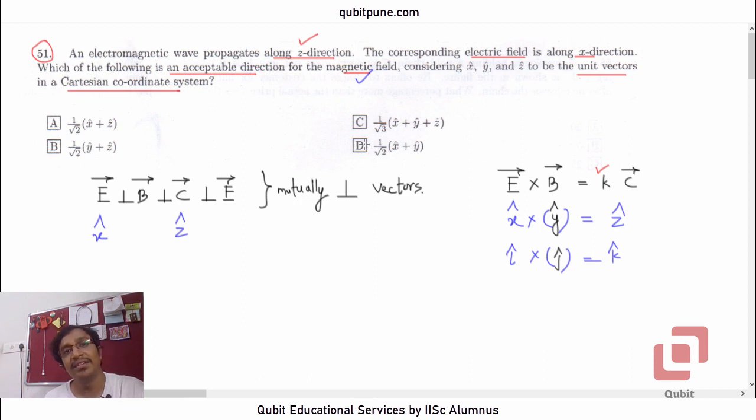If you look at the answer key available on the web, they will say that for question 51, there was no correct option.